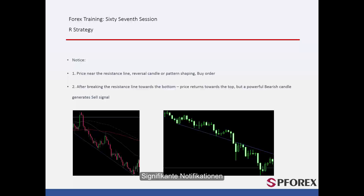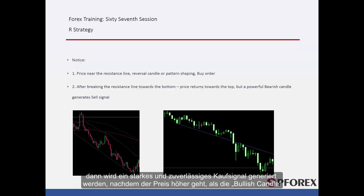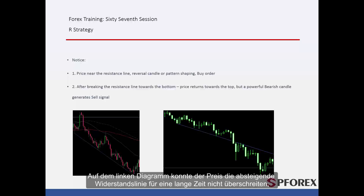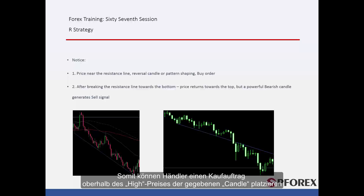Significant Notifications 1: When price declines towards the resistance line without crossing anything, if a powerful bullish candle forms near the resistance line, then a powerful and reliable buy signal is generated after price goes higher than that bullish candle. On the left graph, price could not cross the resistance line for a long time. After it fell near this line, a bullish hammer candle formed. Thus, a trader could place a buy order above the high price of the given candle.